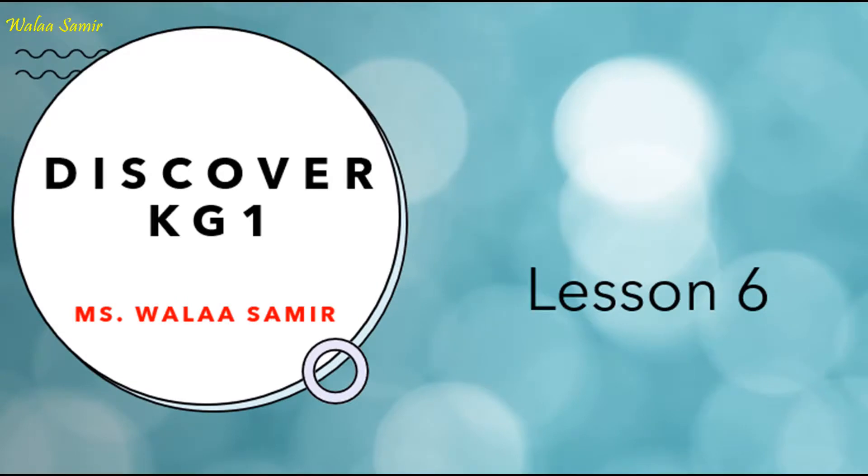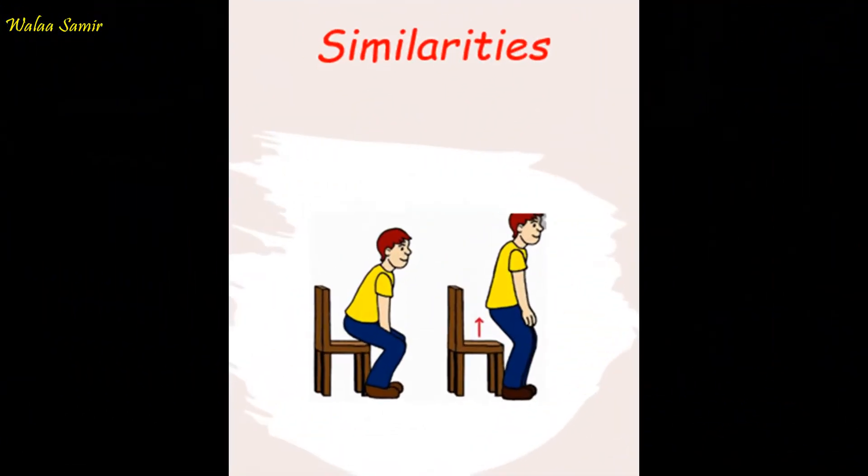Listen 6 words. Similarities. As you can see in the picture, what are the similarities between the two pictures? Yes, for example, there is a boy. He's wearing a blue T-shirt. There is a brown chair. And those are similarities.